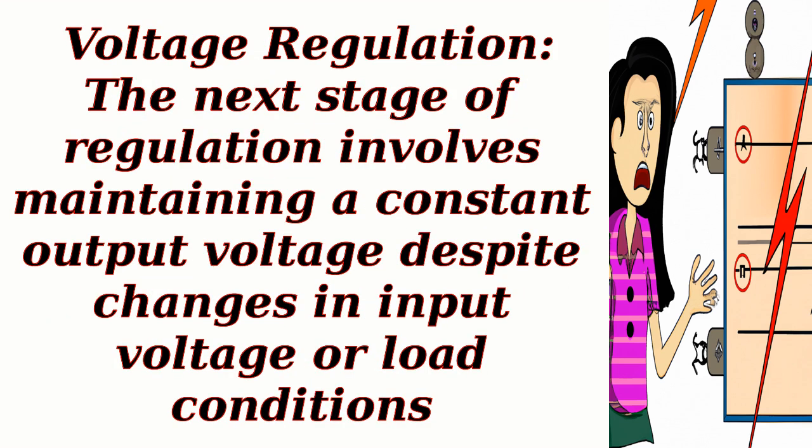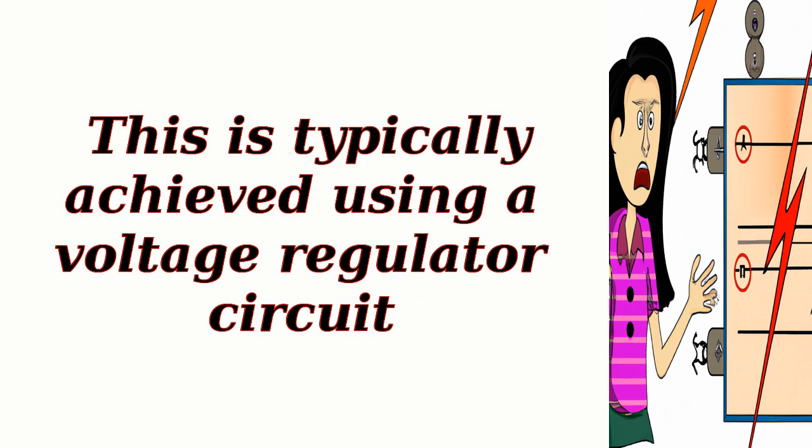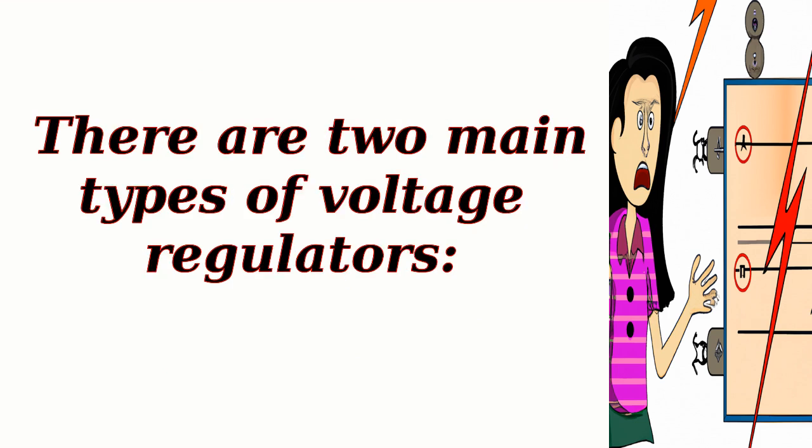Voltage regulation. The next stage involves maintaining a constant output voltage despite changes in input voltage or load conditions. This is typically achieved using a voltage regulator circuit. There are two main types of voltage regulators.